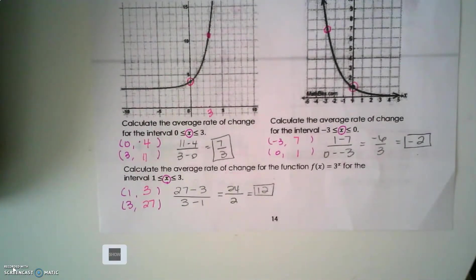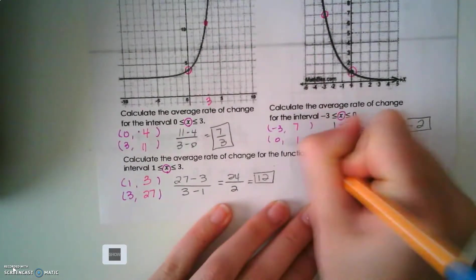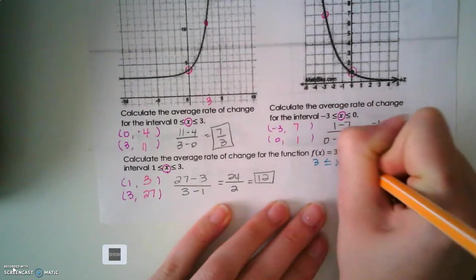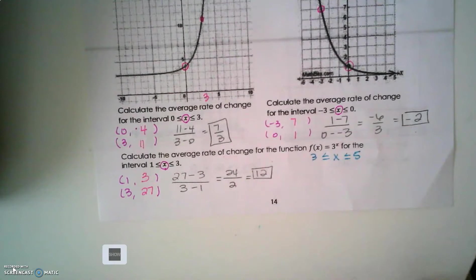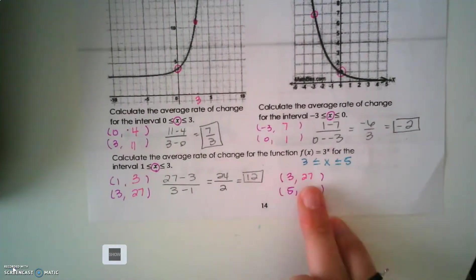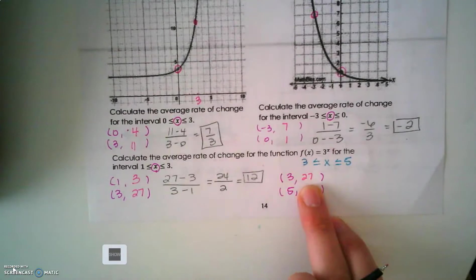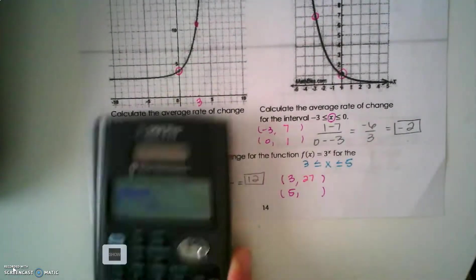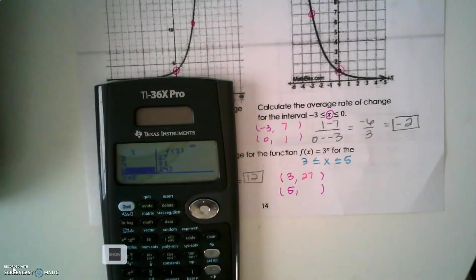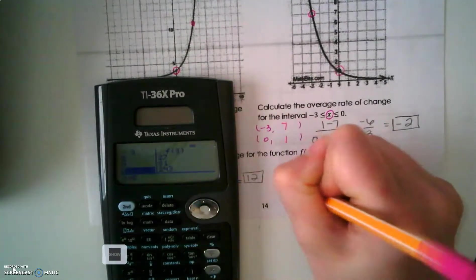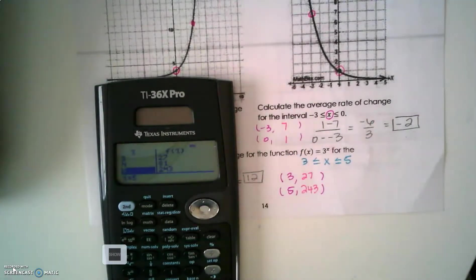So, now I want you to try something. I'm going to add an example here. Let's find this from 3 to 5. So, use your table in your calculator or substitute it in, but pause the video and try this. Alright, we already know the y value of 3 because we found it in the previous problem. But let's look in our table for 5. So, I'm going to keep scrolling. That says 5, 243.